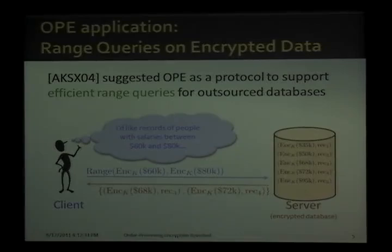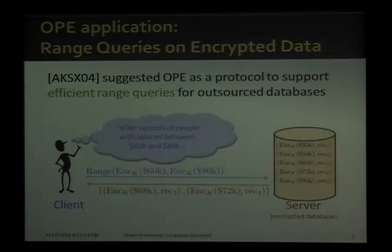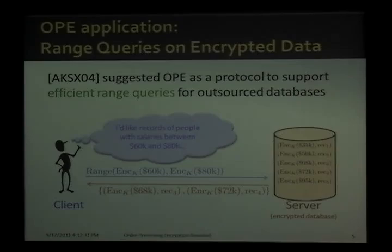You might be wondering why something as limited and seemingly insecure as this could be useful. That brings me to the canonical application for OPE: supporting efficient range queries on encrypted data, specifically for outsourced databases. This application was noted in the database community back in 2004. The client stores an OPE-encrypted database on an outsourced server, and to access range-specified data, it's as easy as if the database were not encrypted at all. He simply encrypts the two ends of the range, sends those ciphertexts to the server, and the server returns all records for which the ciphertext falls between those two values.